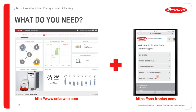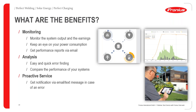Through Fronius SOS you can also request device exchange or repair depending on the warranty period. The three key benefits of using Fronius SolarWeb are: first, monitoring — checking system output, earnings, overall power consumption, and receiving performance reports via email. Second, analysis — identifying errors proactively, before customers report them, enabling preventive maintenance to maximize system uptime.